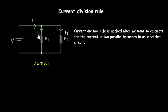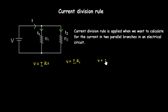To calculate the voltage across R1, we write V equals i1 times R1, which gives us the same voltage V from the source. Similarly, for the second resistor, the voltage equals i2 times R2, which also gives us the same voltage V.